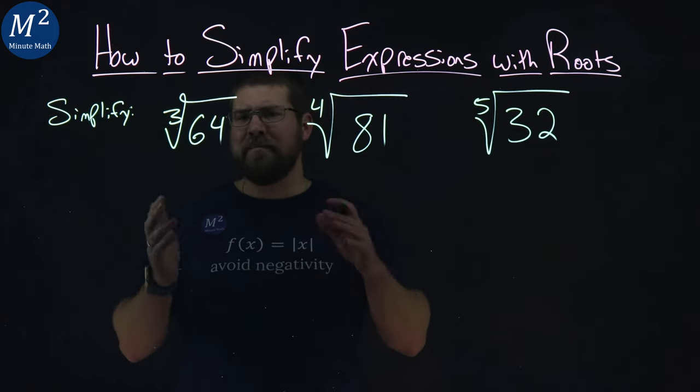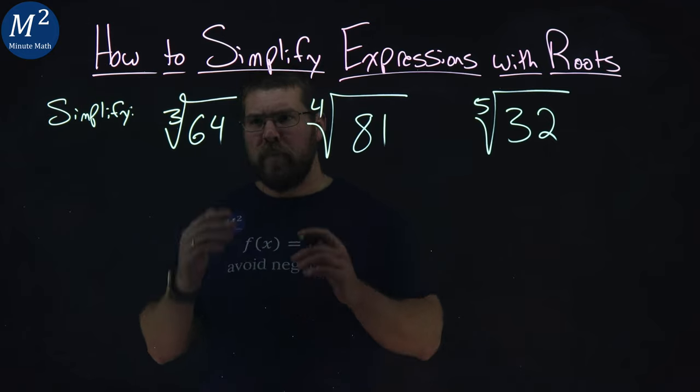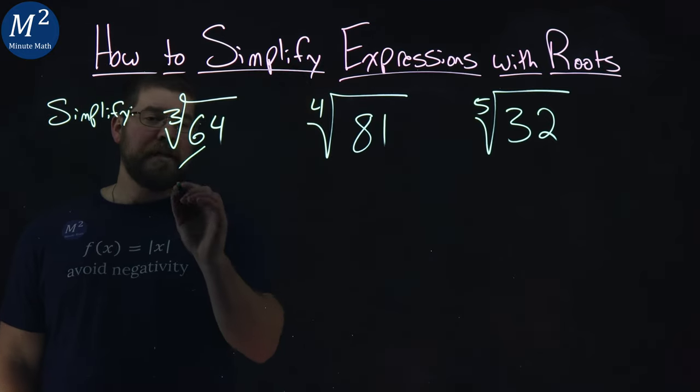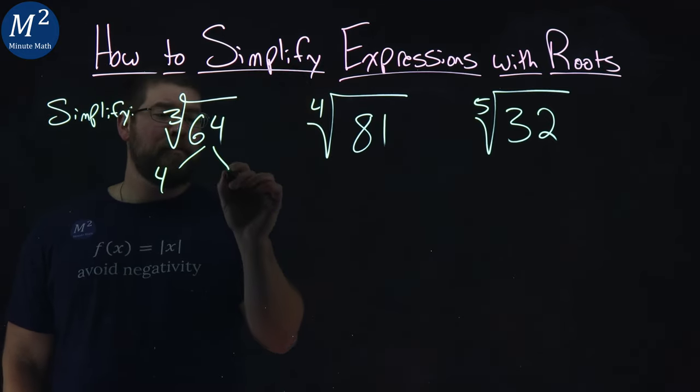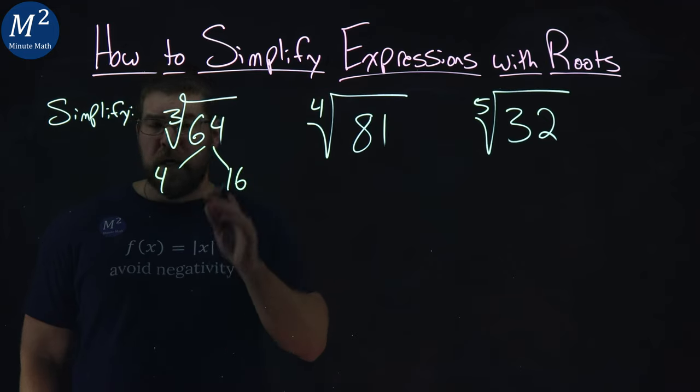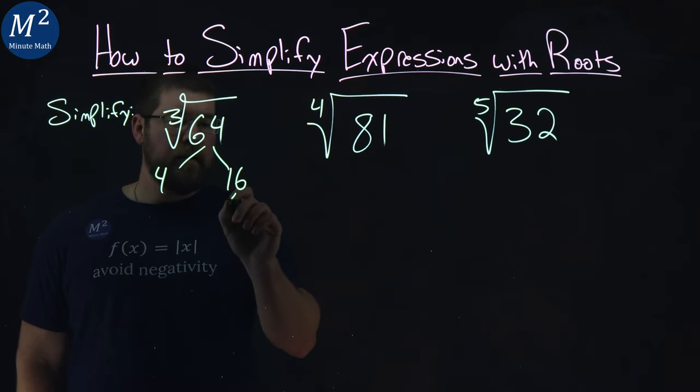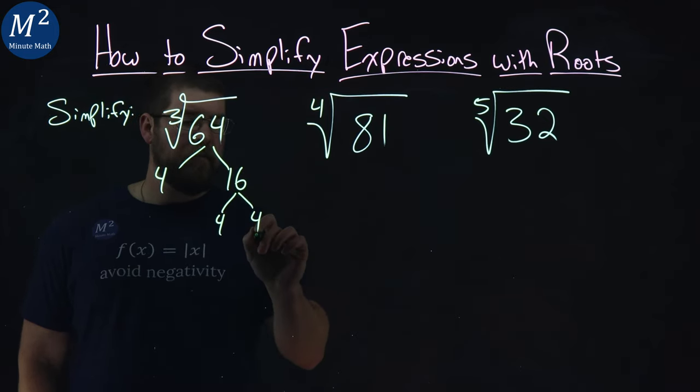Now, some people have this memorized, and some of these numbers you'll see often, but I like to make a factor tree when I do this and kind of help visualize it. So 64 can be broken down to be a 4 times a 16. Then from there, 16 is a 4 times a 4.